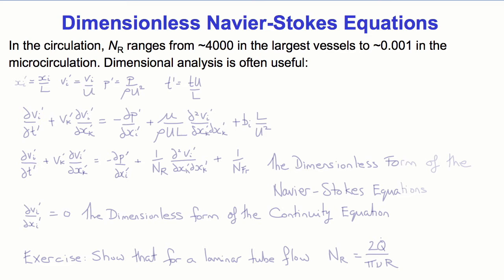Remember last time when we derived the Navier-Stokes equations, we pointed out that the derivation was only valid for laminar flows, and we introduced a dimensionless variable NR, the Reynolds number, that could be used to determine whether flow would be laminar or turbulent. In the circulation, the Reynolds number varies from about 4,000 in the largest vessels to about 0.001 in the microcirculation. This means that in the very largest vessels and in the heart, the flow can be turbulent, but in most of the circulation, the flow is laminar. Whereas in the large vessels, where the Reynolds number is significantly greater than 1, the convective inertial forces dominate the viscous forces, in the small vessels, in the microcirculation and arterioles, the Reynolds number is much less than 1, and the viscous forces dominate the convective inertial forces.